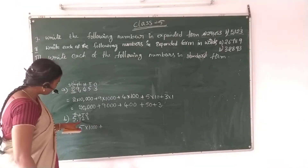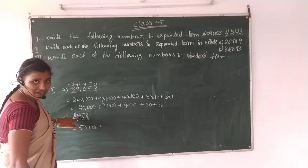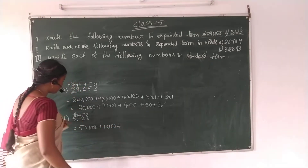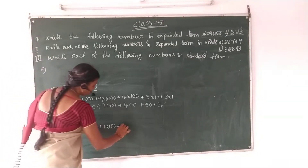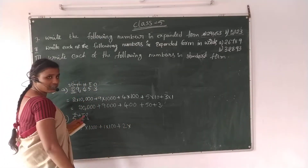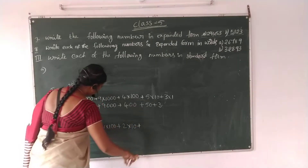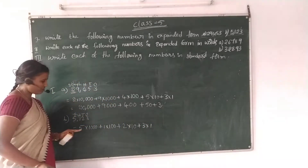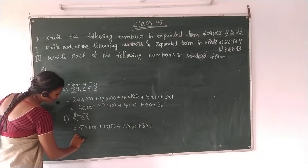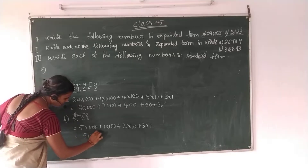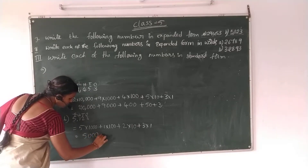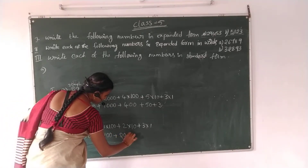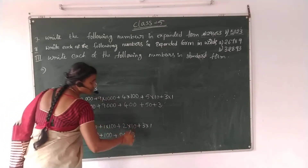Plus 2 into 10, plus 3 into 1. So: 5 into 1,000 is 5,000. Plus 100. Plus 2 into 10 is 20. Plus 3 ones are 3.